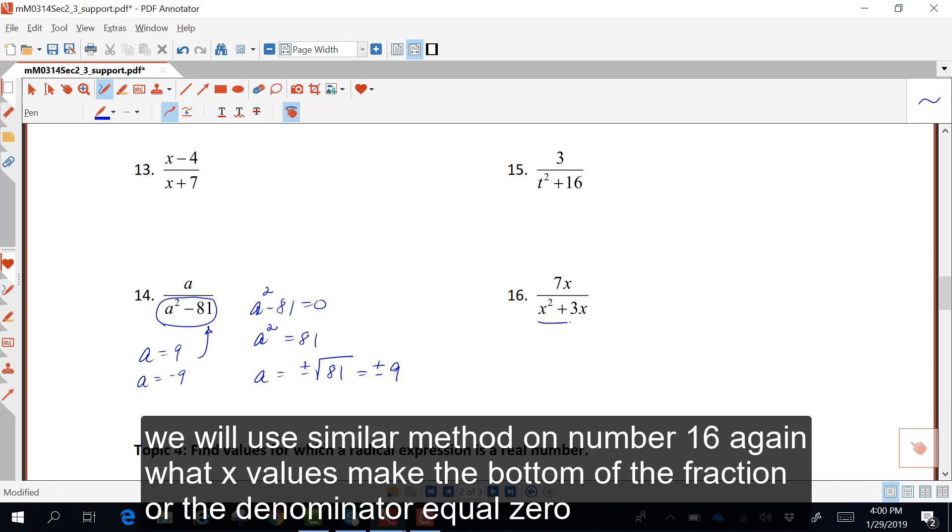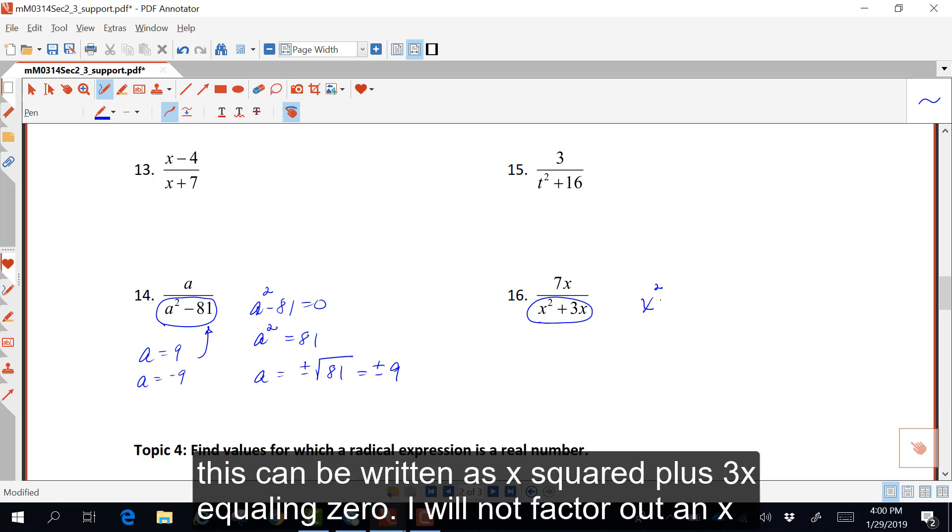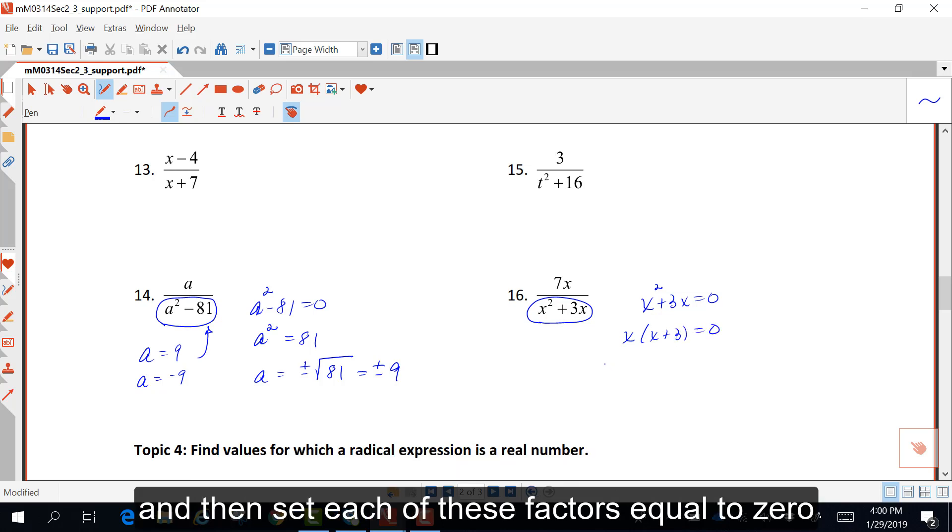We will use a similar method on number 16. Again, what x values make the bottom of the fraction, or the denominator, equal 0? This could be written as x squared plus 3x equaling 0. I will now factor out an x, and then set each of these factors equal to 0.